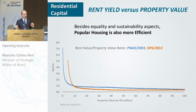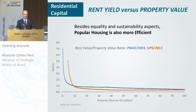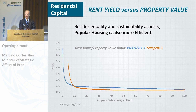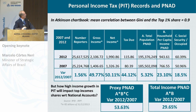There is an interesting aspect of popular housing programs: smaller homes give a higher yield than bigger or more expensive properties. If you have money to buy a hundred-thousand-dollar home, you get a better rent yield with two fifty-thousand-dollar homes. So there are not only equity and sustainability concerns, but also efficiency concerns.